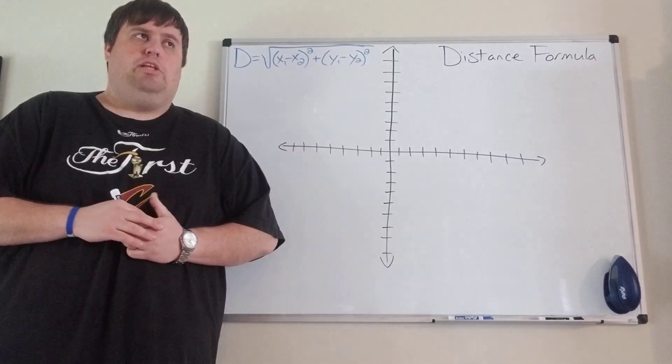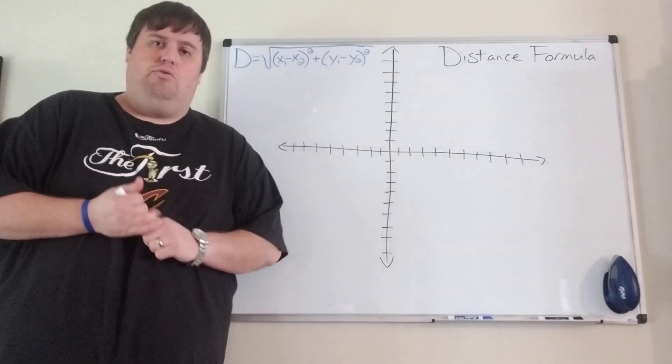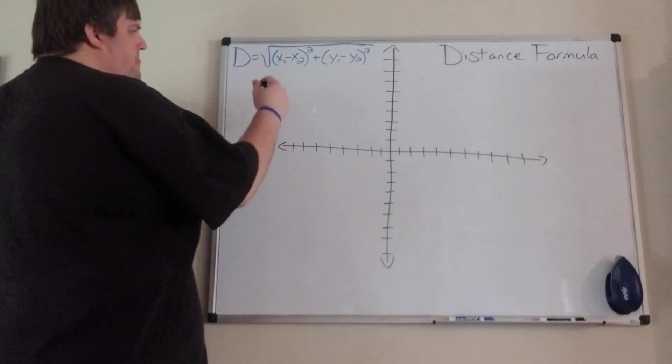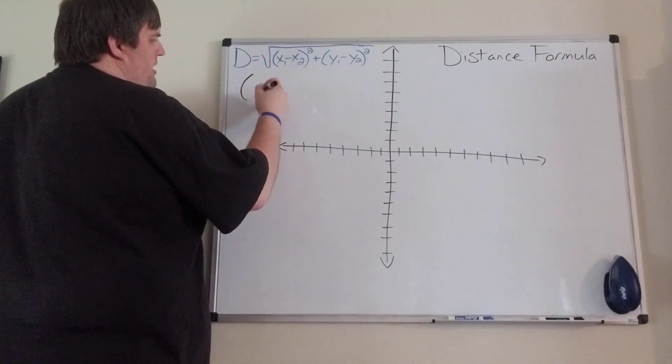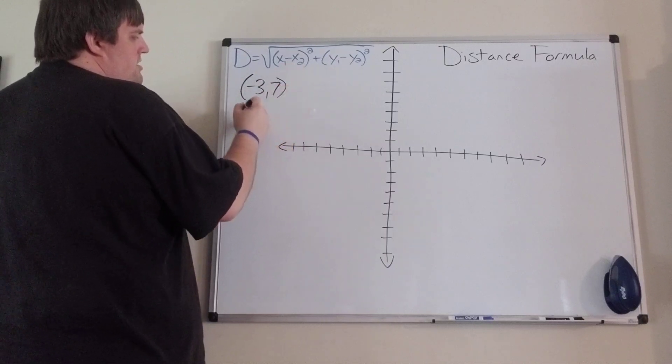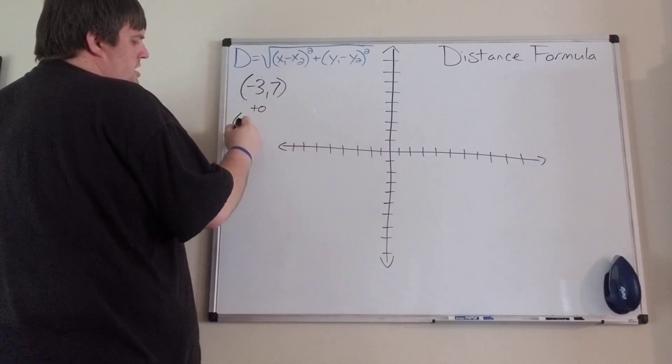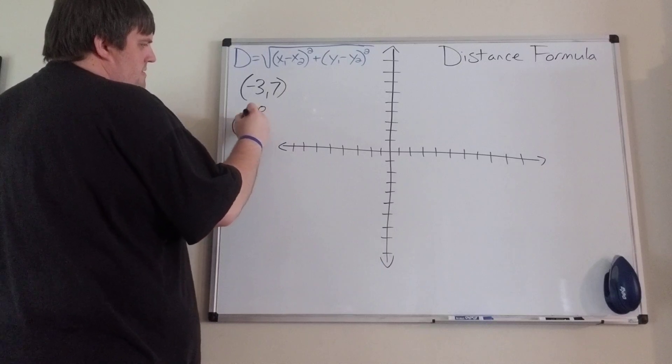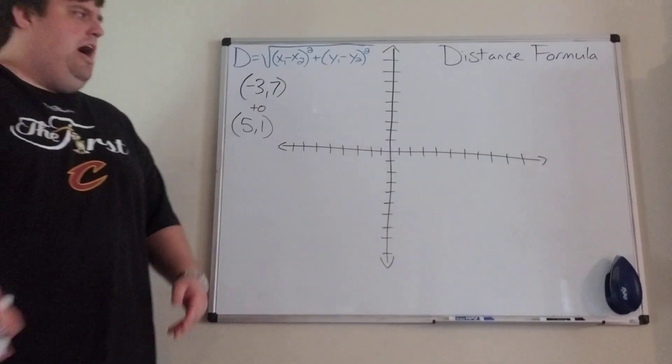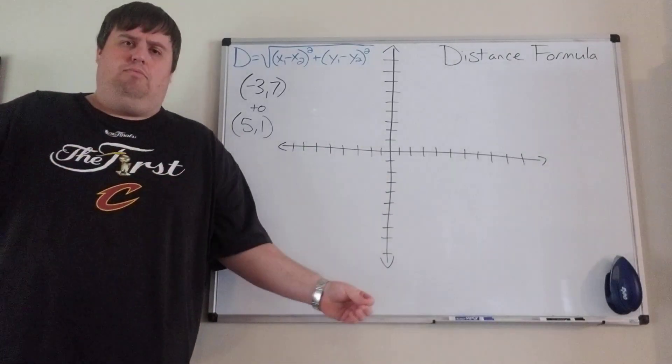So let me show you what this looks like, and then you can be your own judge and figure out which way works better for you. I'll give you one to try here at the end that you're going to submit on Google Docs. All right. So let's say I want to know how far is it from the point negative three, seven to the point five, one. How far is that? What's the distance?